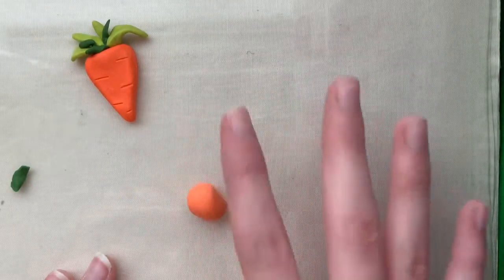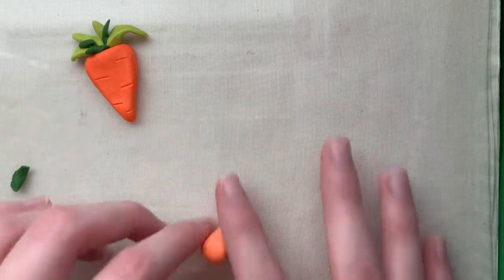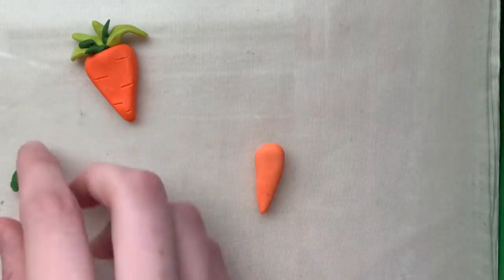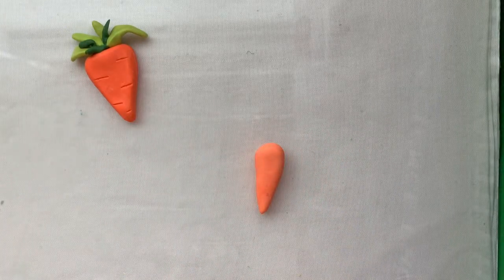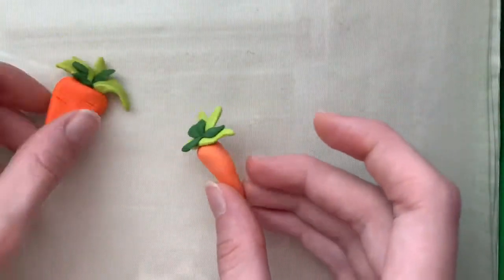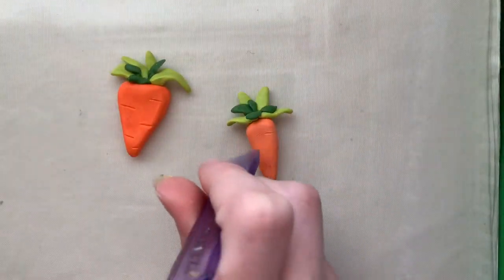Now I'm getting my light orange and I'm going to do the same thing as I did with the bigger one, only I'm not going to press it down. So I'm still making the carrot shape, it's just not going to be flat. Add your leaves. I'm also going to do the lines with this one.